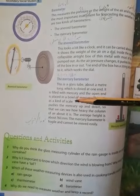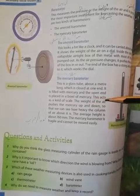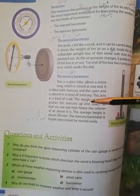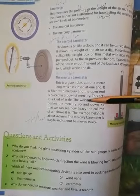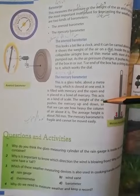The open end is placed in a bowl of mercury. This acts as a kind of scale. The weight of air pushes the mercury up and down so that we can see how heavy the column of air above it is.